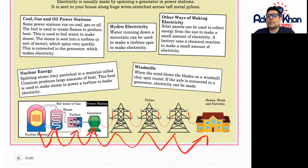Let's have a look at windmills. When the wind blows, the blades on a windmill spin around. If the axle is connected to a generator, electricity can then be formed.